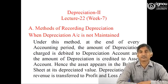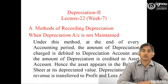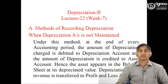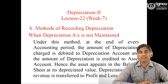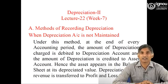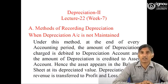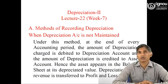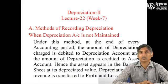For example, if we buy an asset of rupees 1 lakh and charge depreciation of rupees 10,000 for the first year, at the end of the first year when we prepare the financial statements, we will charge rupees 10,000 as depreciation from the profit and loss account. In the balance sheet, we will show the asset at rupees 90,000 — that is the original cost of rupees 1 lakh minus depreciation of rupees 10,000. This net balance of 90,000 is generally called the book value of the asset.